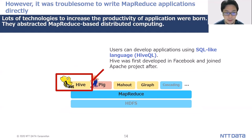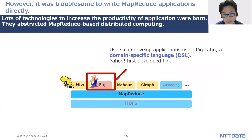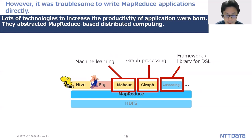For example, using Apache Hive, users can develop applications using a SQL-like language called HiveQL. Hive was first developed at Facebook and later joined the Apache project. Using Apache Pig, users can develop applications using Pig Latin, a domain-specific language; Yahoo first developed Pig. Also, Apache Mahout was born as a machine learning library, Giraph is for graph processing, and Cascading is a framework for building custom DSLs.